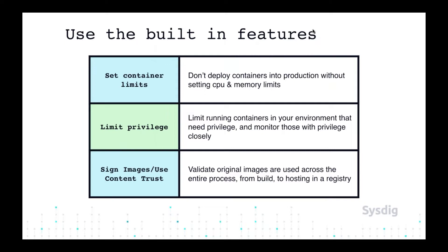Also look at signing your images and maintaining trust throughout the entire process — from build to hosting in a registry to deploying that image. Grafeas is one project starting to get a lot of momentum in the community, providing an API to see all the artifacts and metadata throughout the trust process as the container moves throughout its lifecycle.